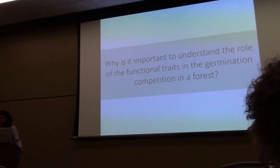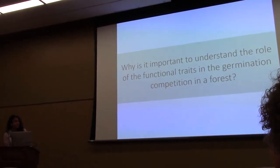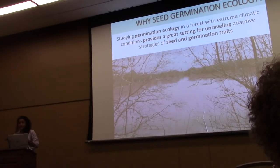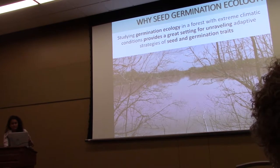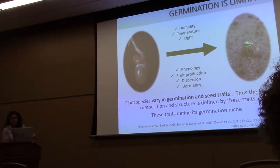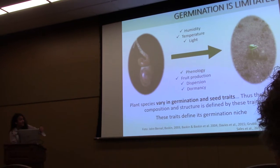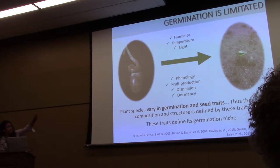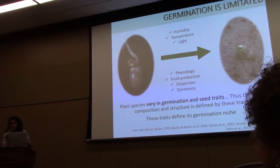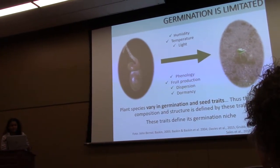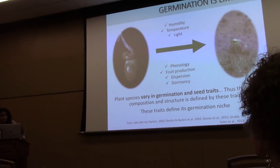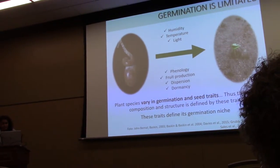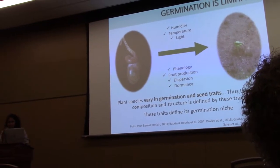Why is it important to understand the role of functional traits in germination competition in a forest? Because germination is a limiting factor for species to occur in a forest. Plants must pass through many ecological filters — some extrinsic, like climate and the seasonality of a place, and some intrinsic to the species, like phenology, fruit production, dispersion, and dormancy.